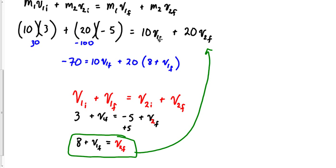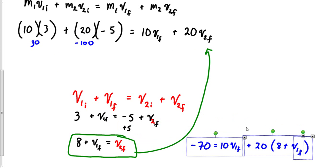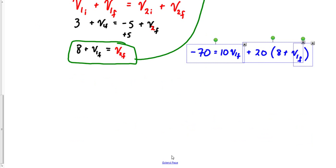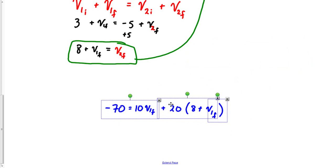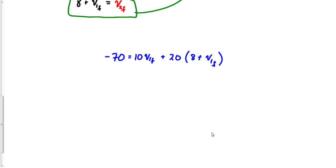I'm going to take this and drag it down. I want to look at this one where I've got plenty of room to do it. So there is our equation. We need to distribute this section here. We've got negative 70 equals 10 v1 final. Let's see, plus 20 times 8 would be plus 160 plus 20 v1 final.